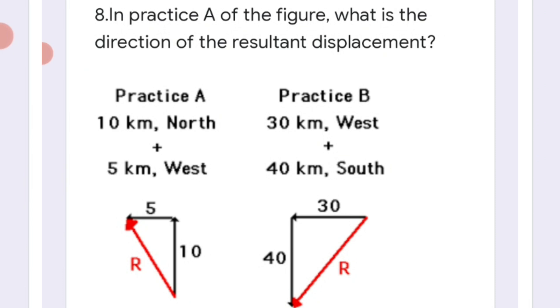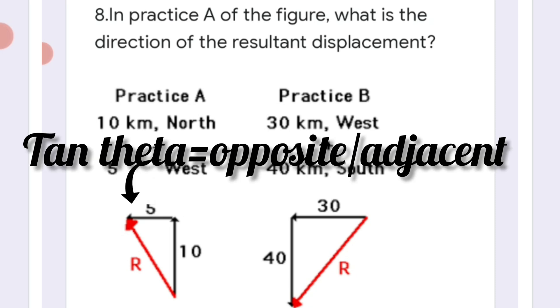In practice A of the figure: what is the direction of the resultant displacement? Here we already learned in the previous question how to find the resultant with the help of Pythagorean theorem. And for the direction, what we need to do is we need to use tan theta. Tan theta is equal to opposite by adjacent.